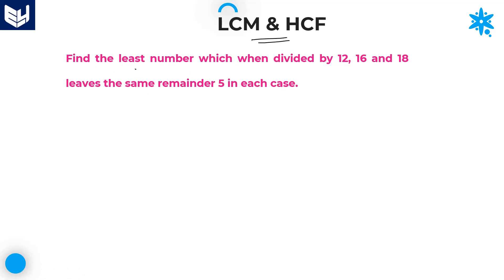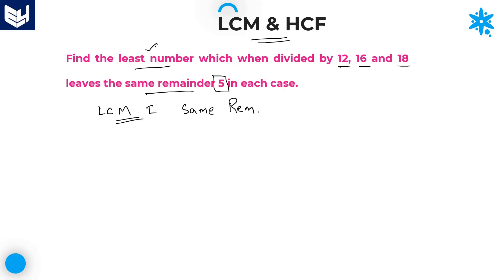Find the least number which when divided by 12, 16, and 18 leaves the same remainder 5 in each case. This problem belongs to LCM first model, that is the same remainder model.